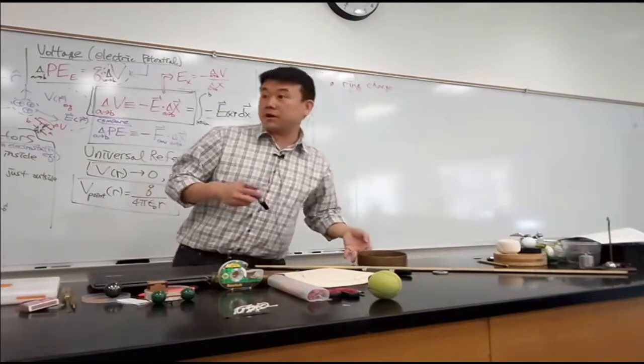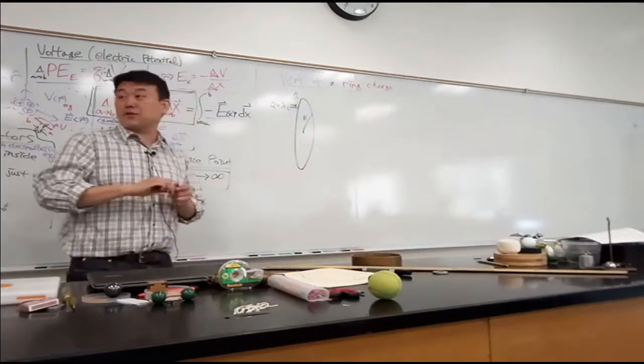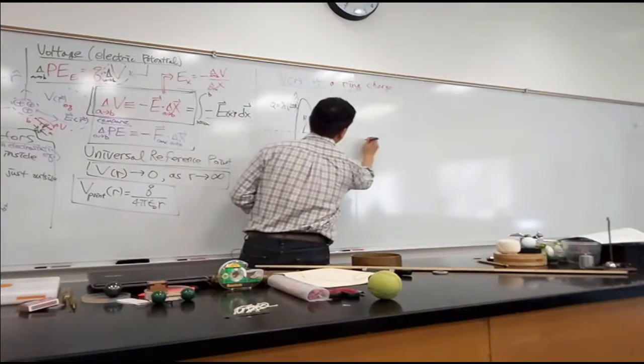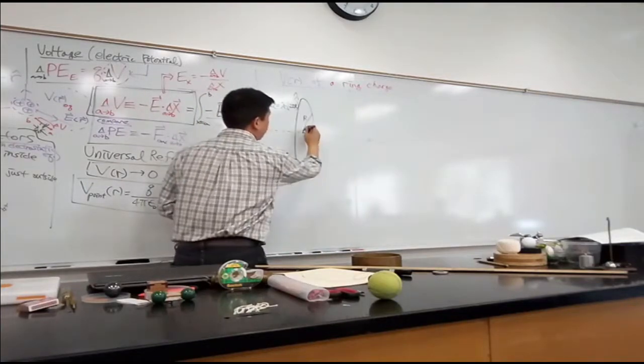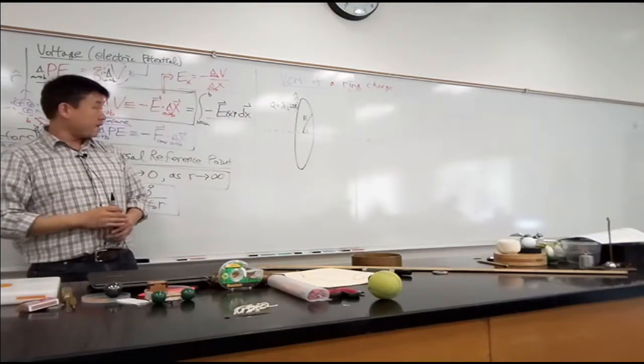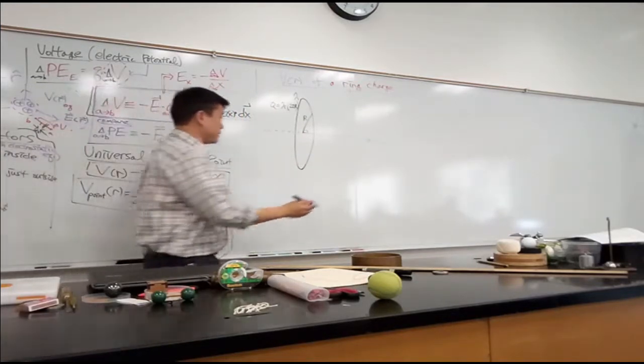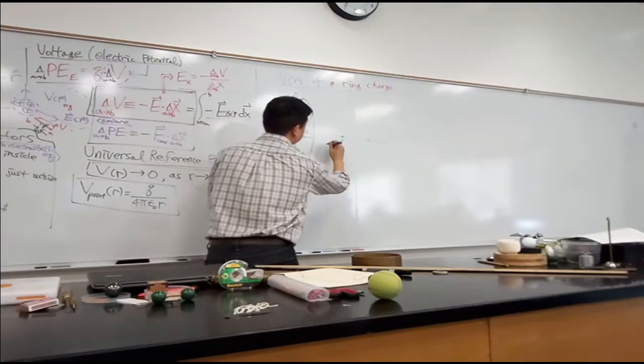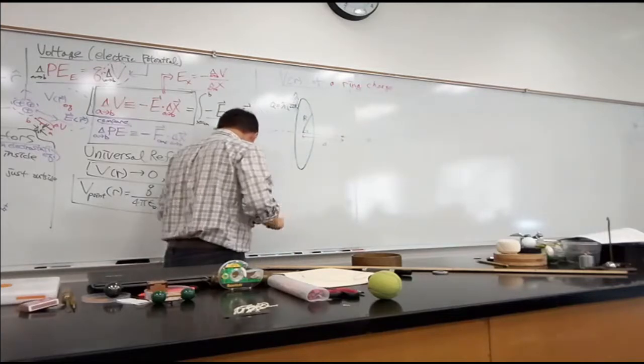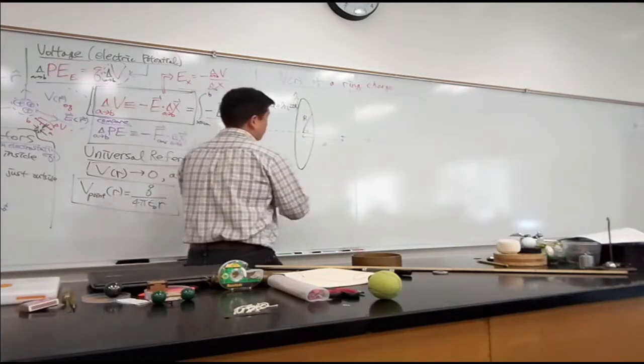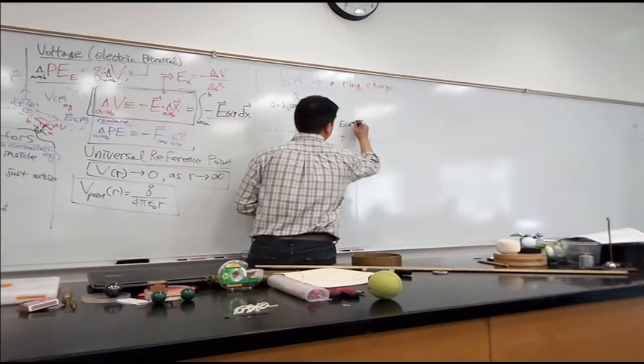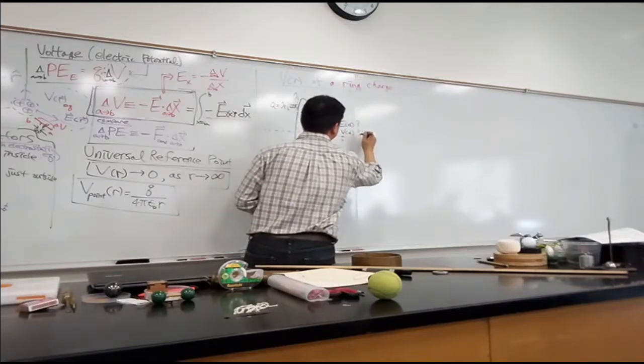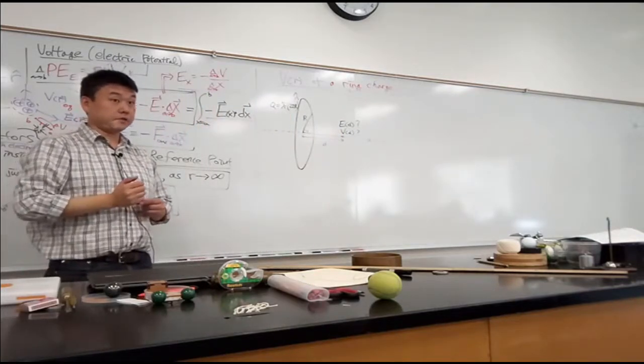So this is the question that someone can still ask. And in fact, I think this is one of your homework questions. So define an axis that goes through the center of the ring, and it's perpendicular to the plane and all that. And what someone could ask is, take a point at some distance d. What is the electric field at that point d? And what is the voltage at that point d?